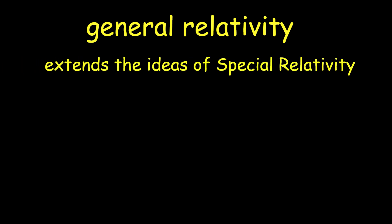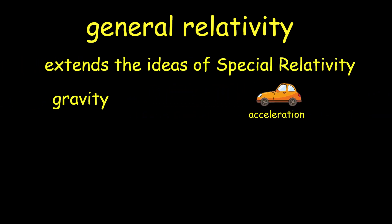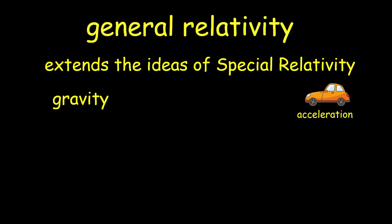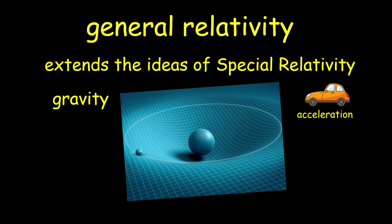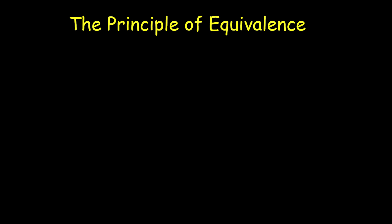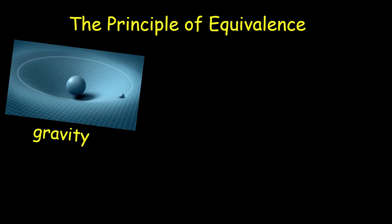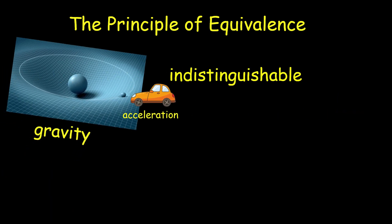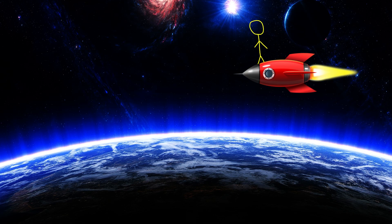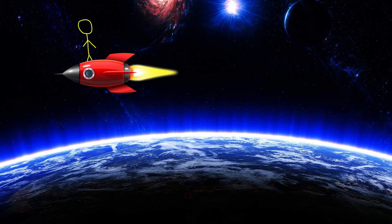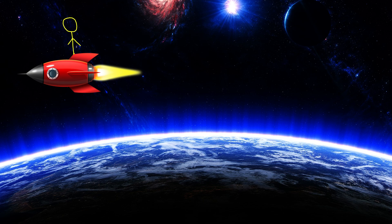General relativity extends the ideas of special relativity to include acceleration and gravity. It provides a new way to understand how gravity works — not as a force, but as a curvature of space and time. The principle of equivalence states that the effects of gravity are indistinguishable from the effects of acceleration. If you are in a spaceship accelerating through space, you would feel a force similar to gravity pulling you towards the back of the ship.